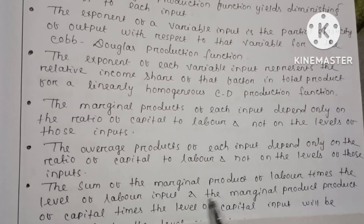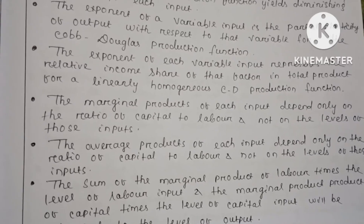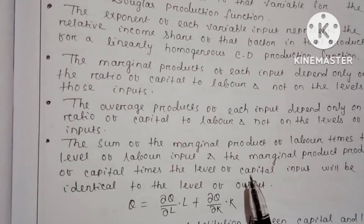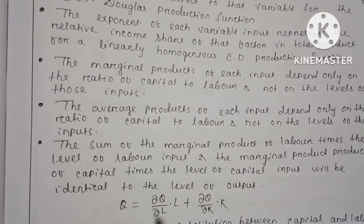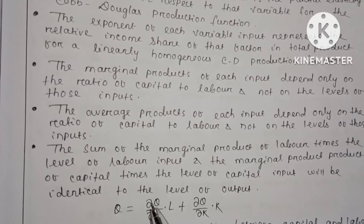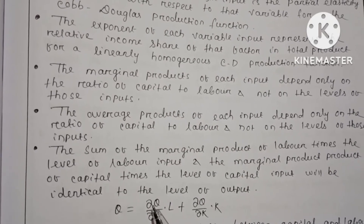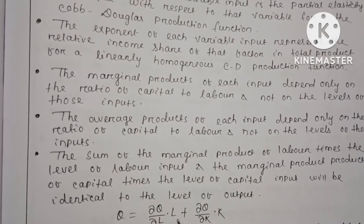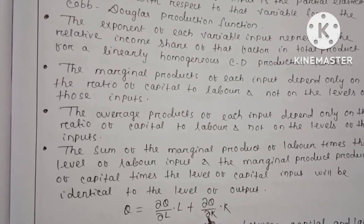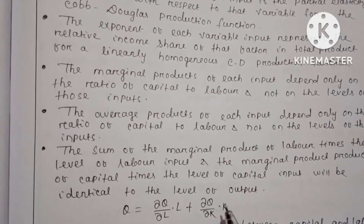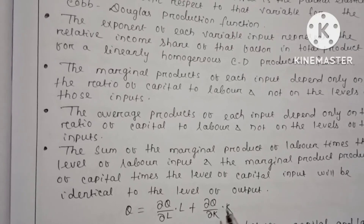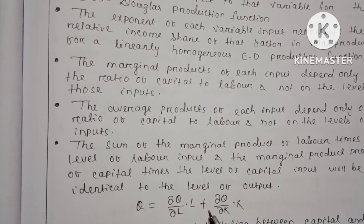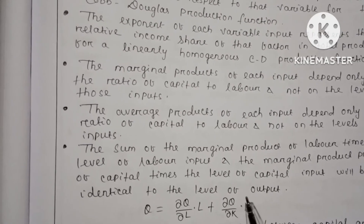The sum of the marginal product of labor times the level of labor input, and the marginal product of capital times the level of capital, will be identical to the level of output. This means the Cobb-Douglas production function satisfies Euler's theorem: Q = (∂Q/∂L)·L + (∂Q/∂K)·K, where ∂Q/∂L is the marginal product of labor and ∂Q/∂K is the marginal product of capital. This is also called the adding-up theorem or product exhaustion theorem.